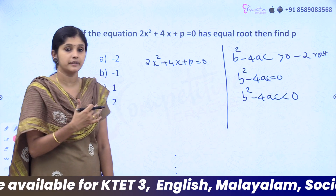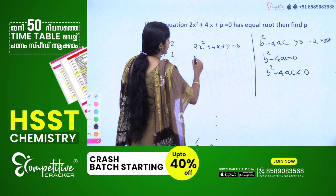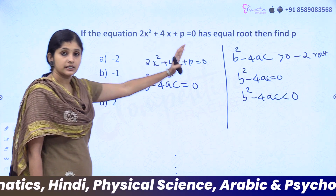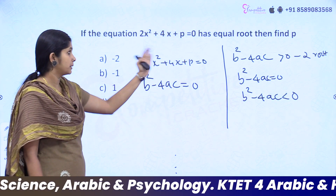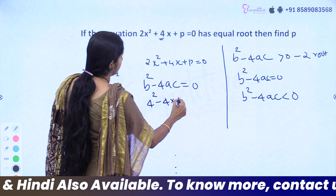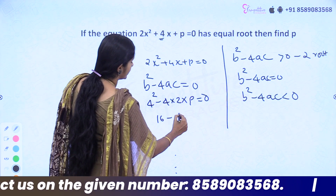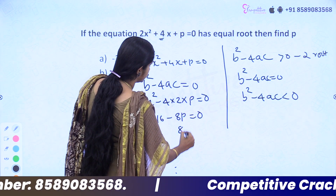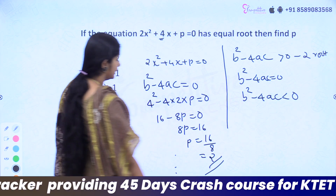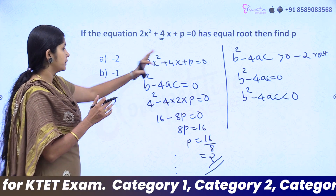For equal roots, b squared minus 4ac equals 0. The question: if 2x squared plus 4x plus p equals 0 has equal roots, find p. Here a equals 2, b equals 4, c equals p. So 4 squared minus 4 into 2 into p equals 0, giving 16 minus 8p equals 0, so p equals 16 divided by 8, which is p equals 2. The answer is option D, p equals 2.